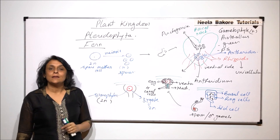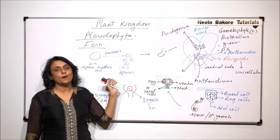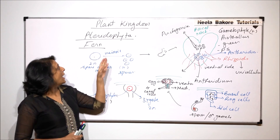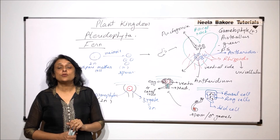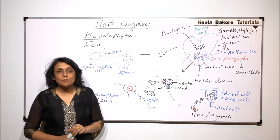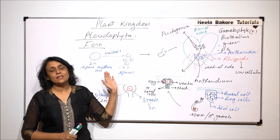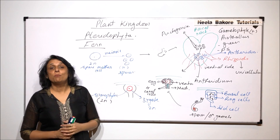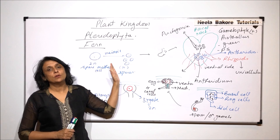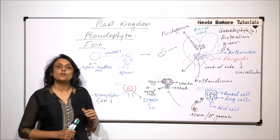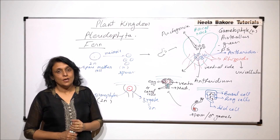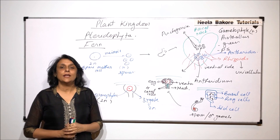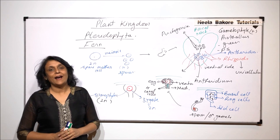The life cycle is completed — gametophyte gives rise to sporophyte and sporophyte gives rise to gametophyte. The fern is mostly used for ornamental purposes, as it has nice long leaves with pinnate compound structure, and it is an ornamental plant commonly grown in gardens. This is one important example of pteridophytes. In the next video, we will talk about another group.